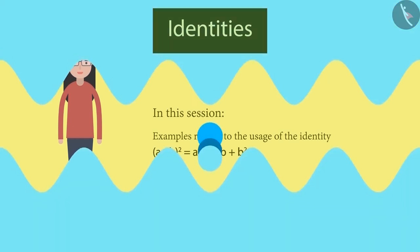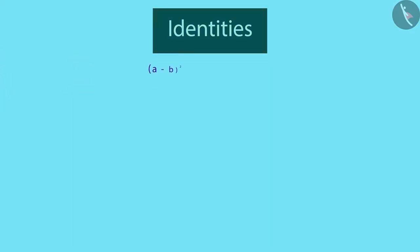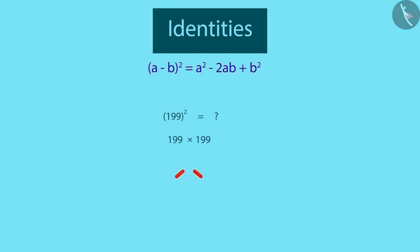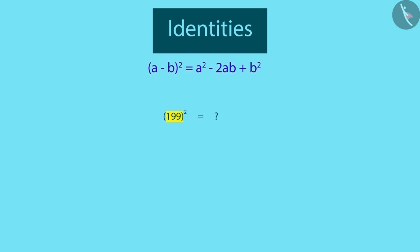Let us see the first example. Let's say you have to find the square of a large number like 199. Multiplying 199 with 199 is time-consuming. Let's see how this identity will make it easier. First, let us try to represent this number with the help of two simple numbers.